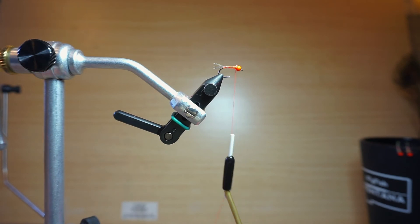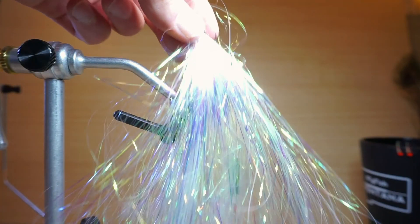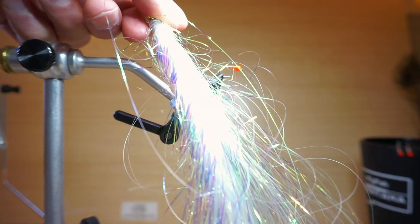So I'll go ahead and trim off the excess material there and use it on my next fly. Next material up is some flash-a-boo. I'm going to use two or three strands of this thinner stuff to accomplish what I'm trying to do. Just cut two or three of those off nice and long so I can use them on the next couple flies that I tie.